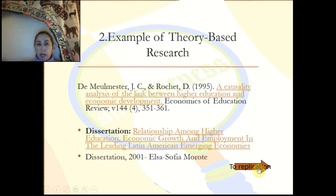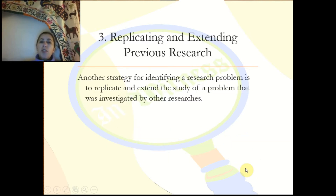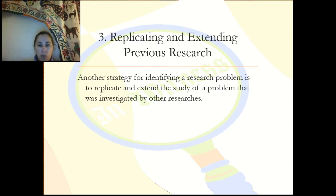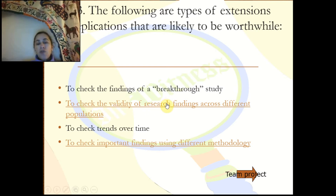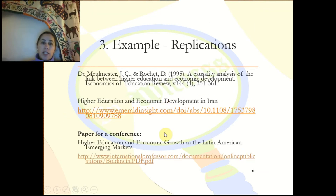That was my dissertation. The third model you can use is replication — you find a research article you like and try to re-apply it. This is a good start for a novice researcher: use the same technique and the same survey and apply it to a different population. In the 1995 article about the causality link between higher education and economic development, I found articles doing the same study in other countries and also articles using different methodology.